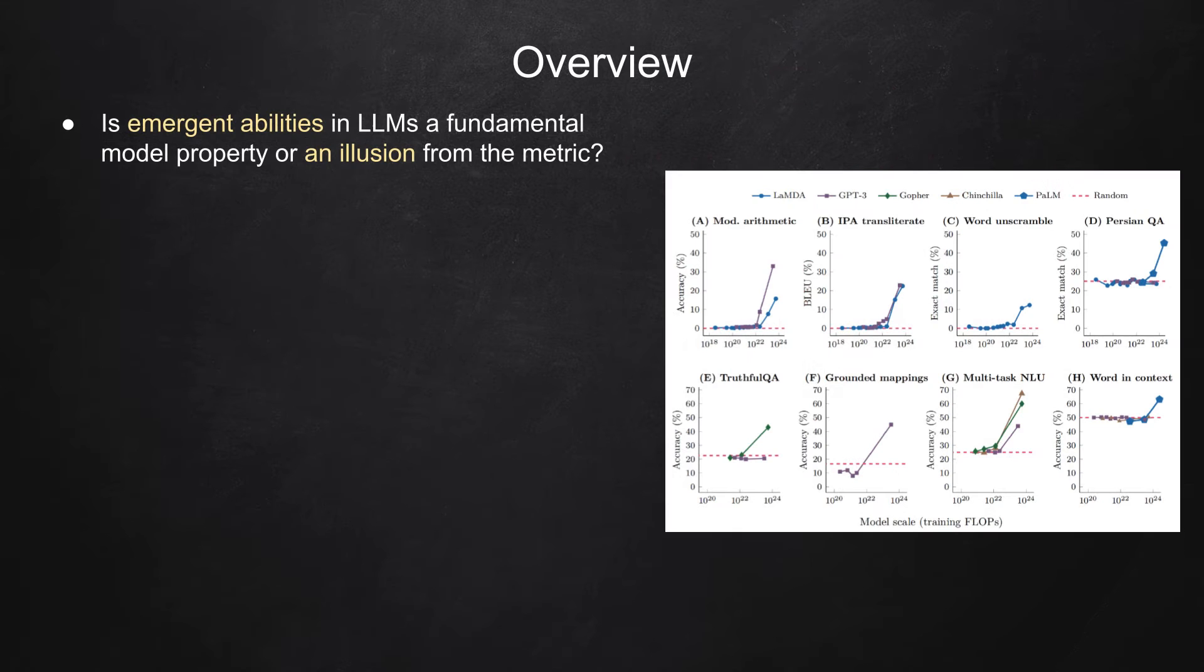This paper questions whether emergent abilities in large language models, or LLMs, are actually a fundamental property of these models, or just an illusion created by the researcher's choice of metrics.